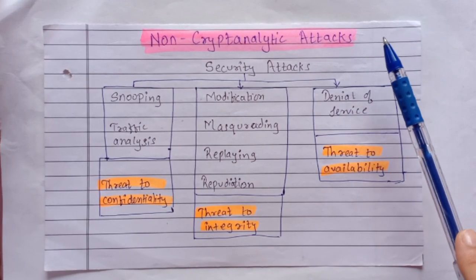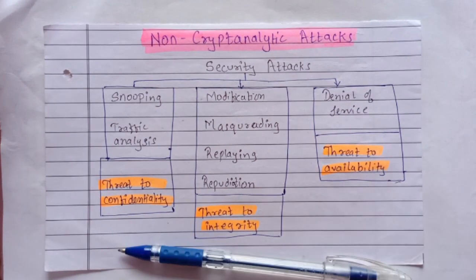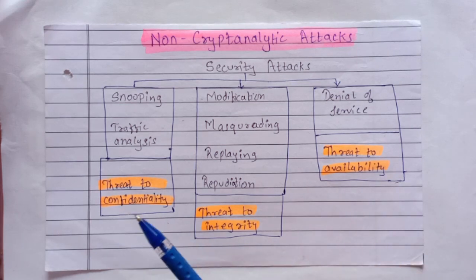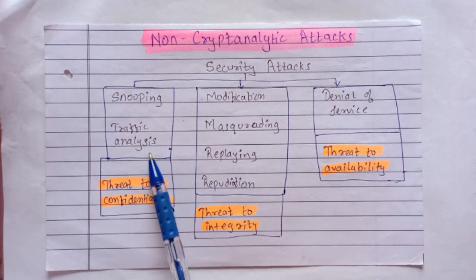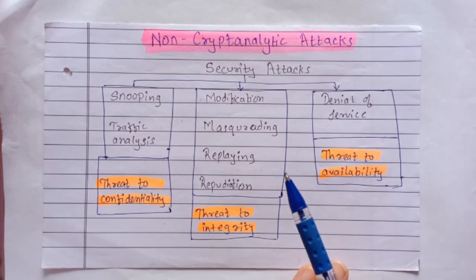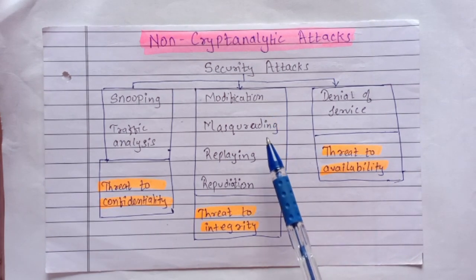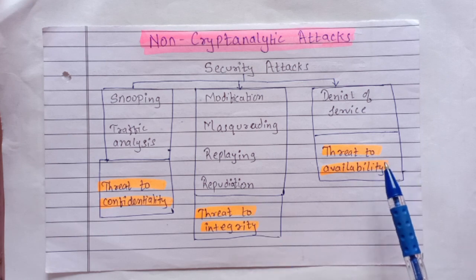Non-cryptanalytic attacks do not exploit the mathematical weakness of the cryptographic algorithm, but the three security goals — confidentiality, integrity, and availability — are threatened by these attacks. Attacks threatening confidentiality are snooping and traffic analysis. Threats to integrity include modification, masquerading, replaying, and repudiation. The threat to availability is denial of service.